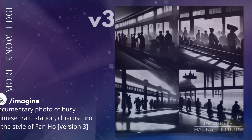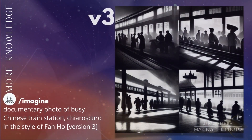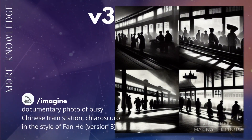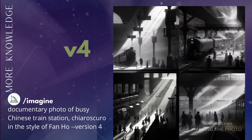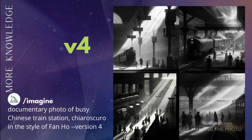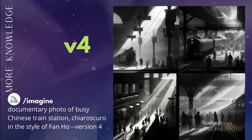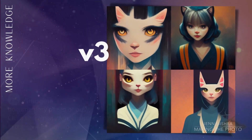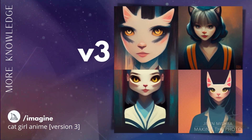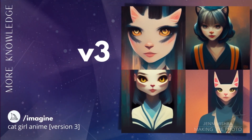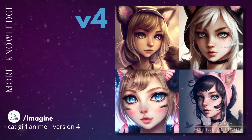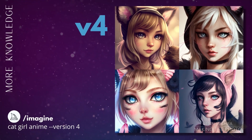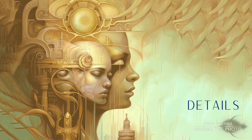Knowledge of styles and artists has also improved. One of my favorite street photographers is the Chinese photographer Fan Ho. Version 3 was okay, but version 4 really nails his photographic style. Midjourney also has a new anime text-to-image editor called Nijijourney — I'll talk more about this in an upcoming video — but styles like anime have also improved in v4.